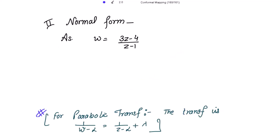Now to get the normal form, take the original transformation w = (3z - 4) / (z - 1). For a parabolic transformation, the normal form is 1/(w - α) = 1/(z - α) + λ, where α is the fixed point. In this case the fixed point is 2, so we require the factors w - 2 and z - 2 in this equation.